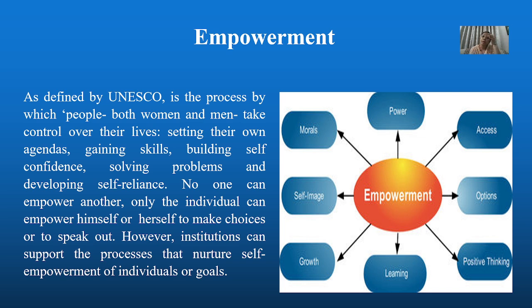What is empowerment, as defined by UNESCO? It is the process by which people — both women and men — take control over their lives, setting their own agendas, gaining skills, building self-confidence, solving problems and developing self-reliance. No one can empower another; only the individual can empower himself or herself to make choices or to speak out. However, institutions can support the processes that nurture self-empowerment of individuals. The indicators of empowerment include: power, access, options, positive thinking, learning, growth, self-image and morals.